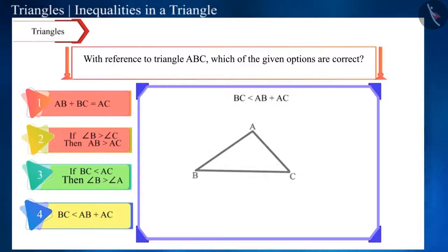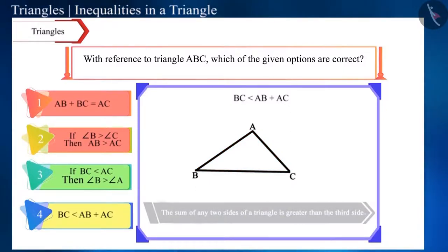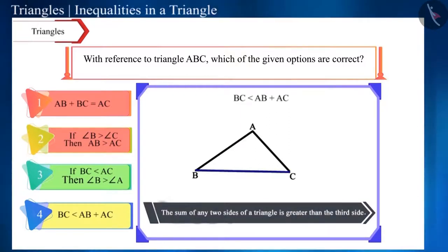Now, let's take the last option. Side BC is smaller than the sum of side AB and side AC. These are the three sides of triangle ABC. And the size of any one side of a triangle is smaller than the sum of the other two sides. So, this option is also correct.